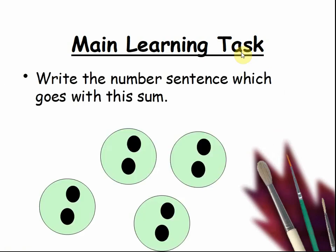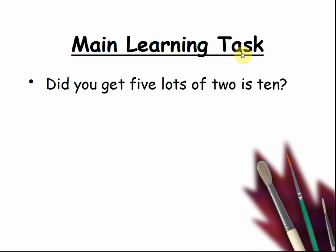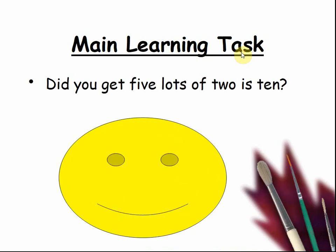Write the number sentence which goes with this sum. If there were five plates and two biscuits on each plate, how many are there all together? So you get five lots of two is ten. Well done.